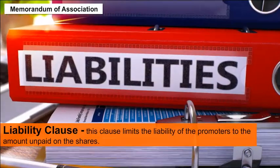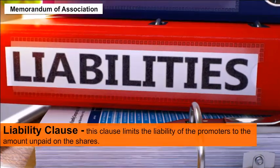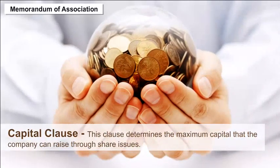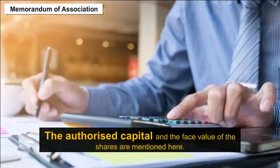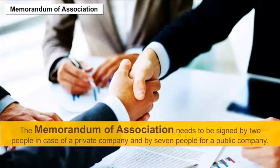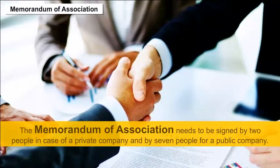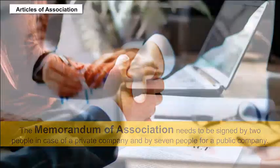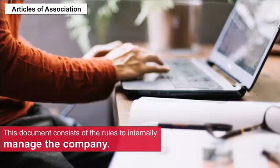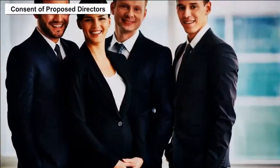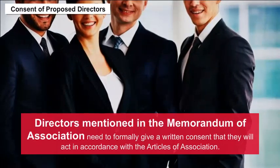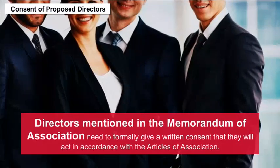The Liability clause limits the liability of the promoters to the amount unpaid on the shares. The Capital clause determines the maximum capital the company can raise through share issues — the authorized capital and the face value of shares are mentioned here. The Memorandum of Association needs to be signed by two people in the case of a private company and by seven people for a public company. The Articles of Association is a document consisting of rules to internally manage the company. Directors mentioned in the Memorandum of Association need to formally give written consent that they will act in accordance with the Articles of Association.